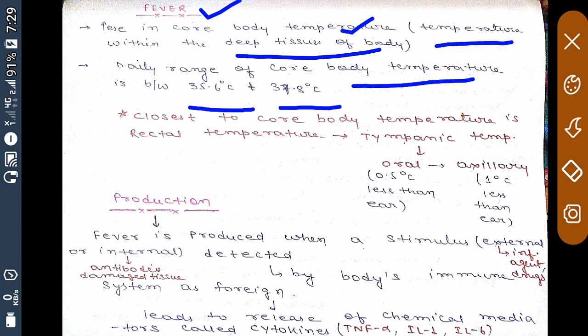Closest to core body temperature is rectal temperature, but it is not suitable for measuring temperature from rectum. The next closest is tympanic temperature, then oral temperature, and then axillary temperature. Oral and axillary temperatures are suitable and easy to measure. Oral temperature is 0.5 degrees Centigrade less than ear temperature, and axillary is one degree Centigrade less than ear temperature.